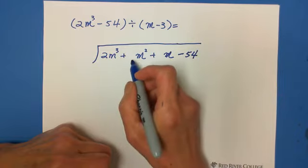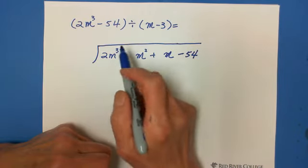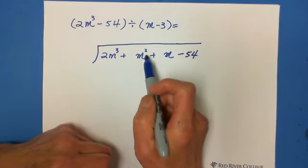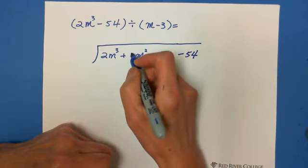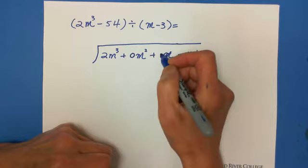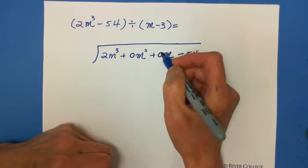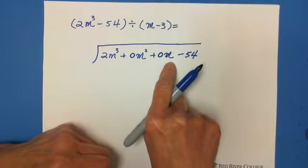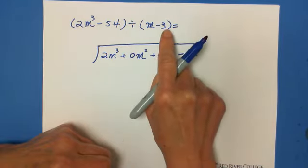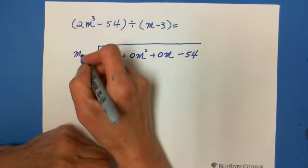And then how to do the coefficient? Because there's nothing, no term existed for m squared and m. So that's why we put coefficient 0. No exists, but we have to write m squared and m so that we can do division in descending order.